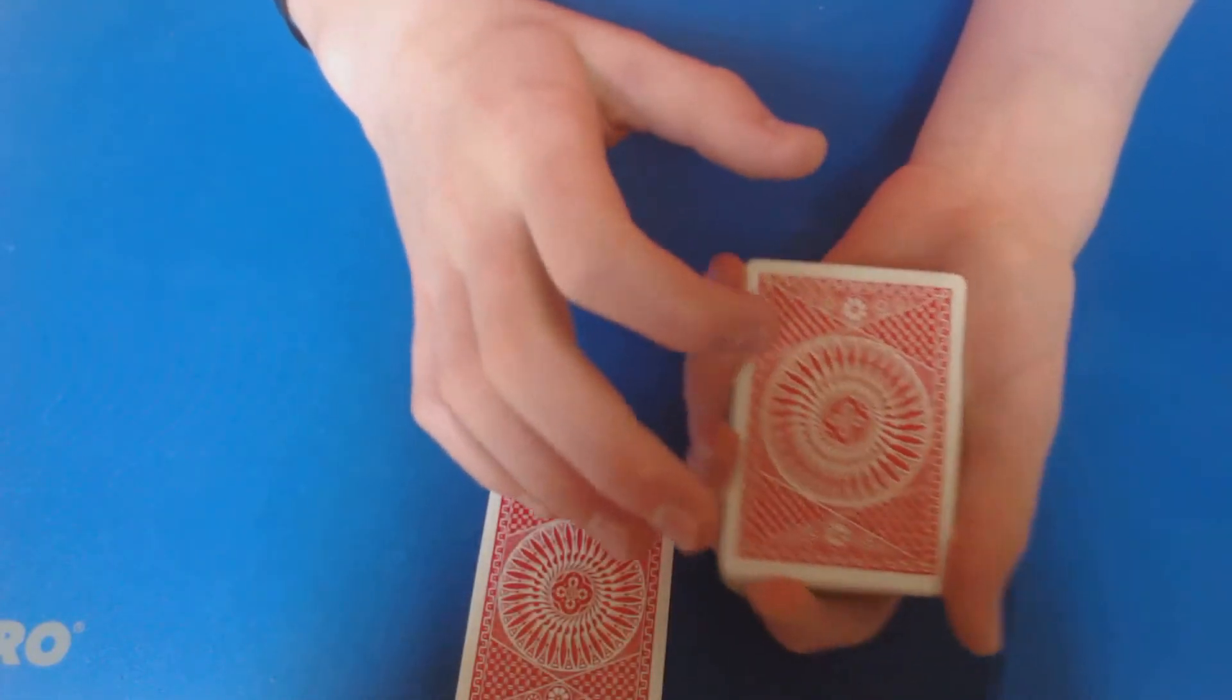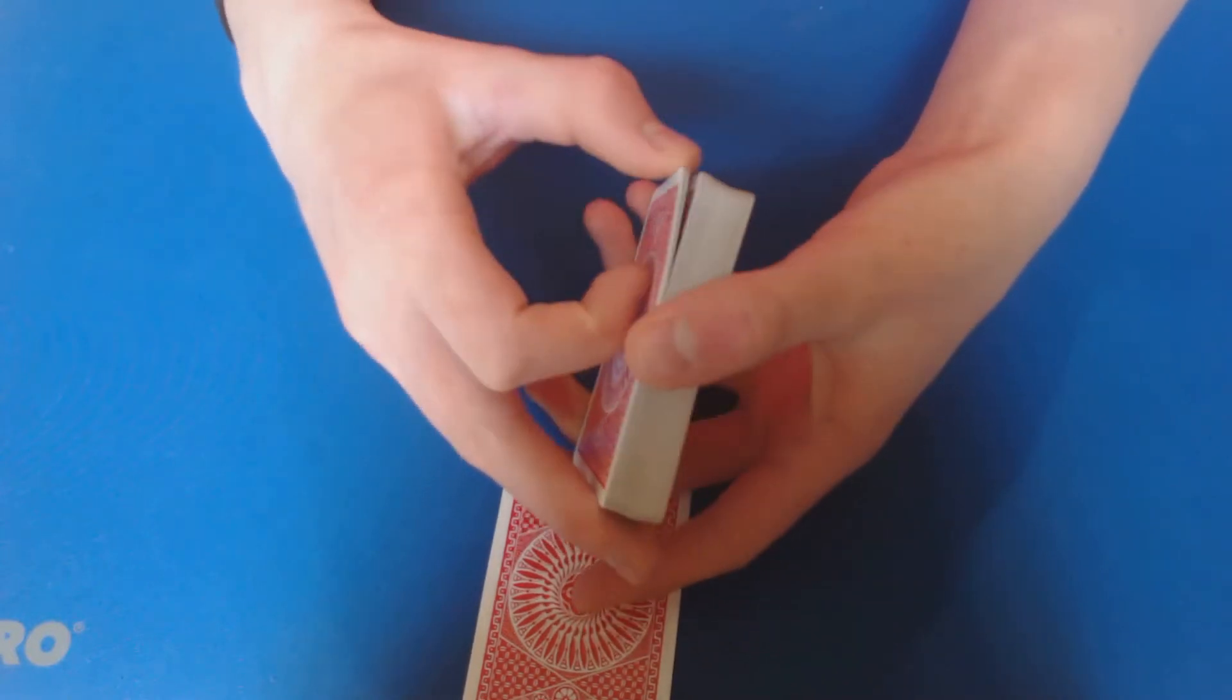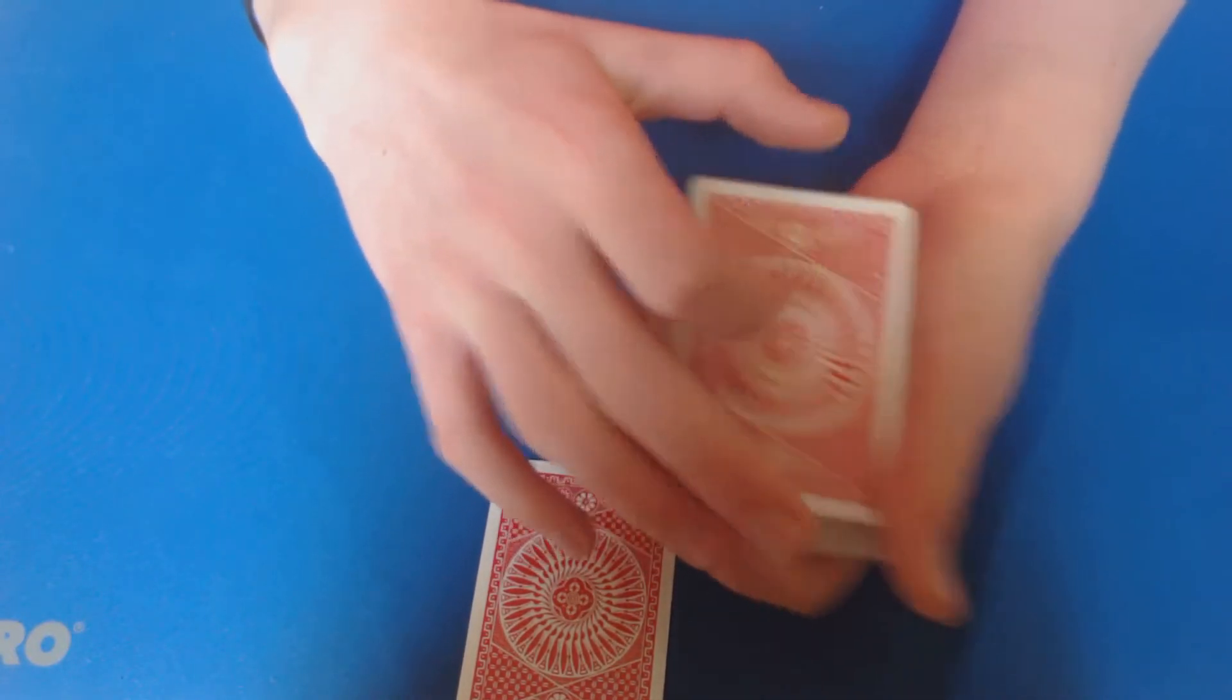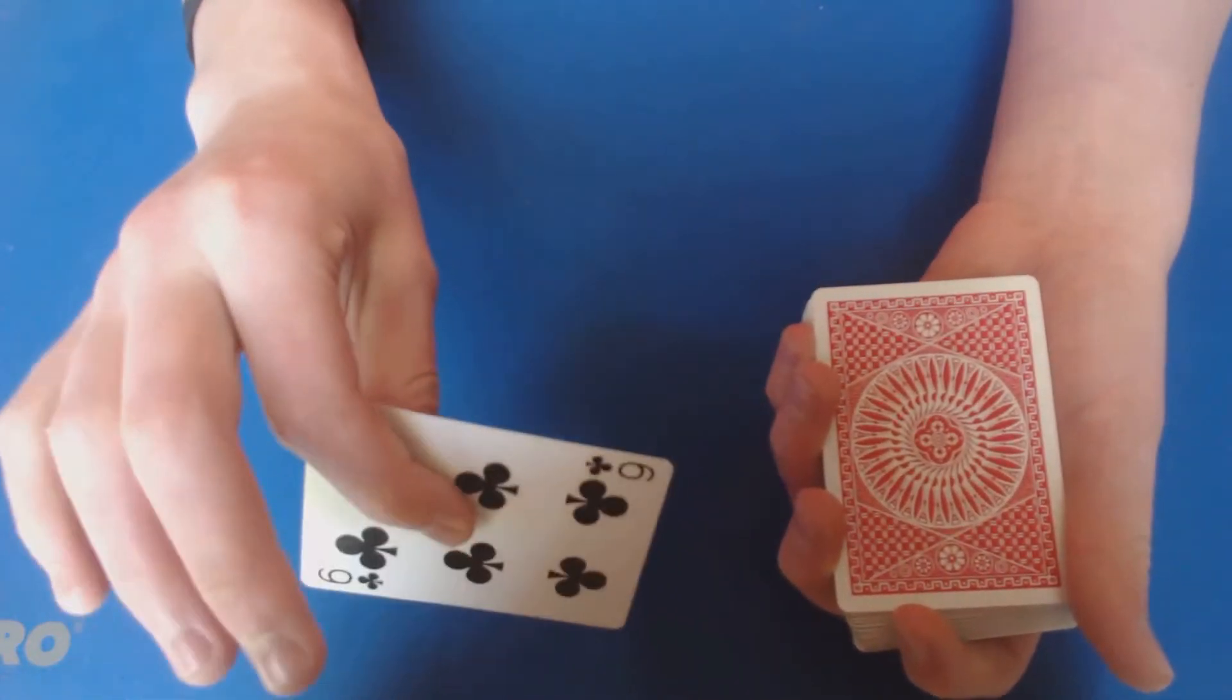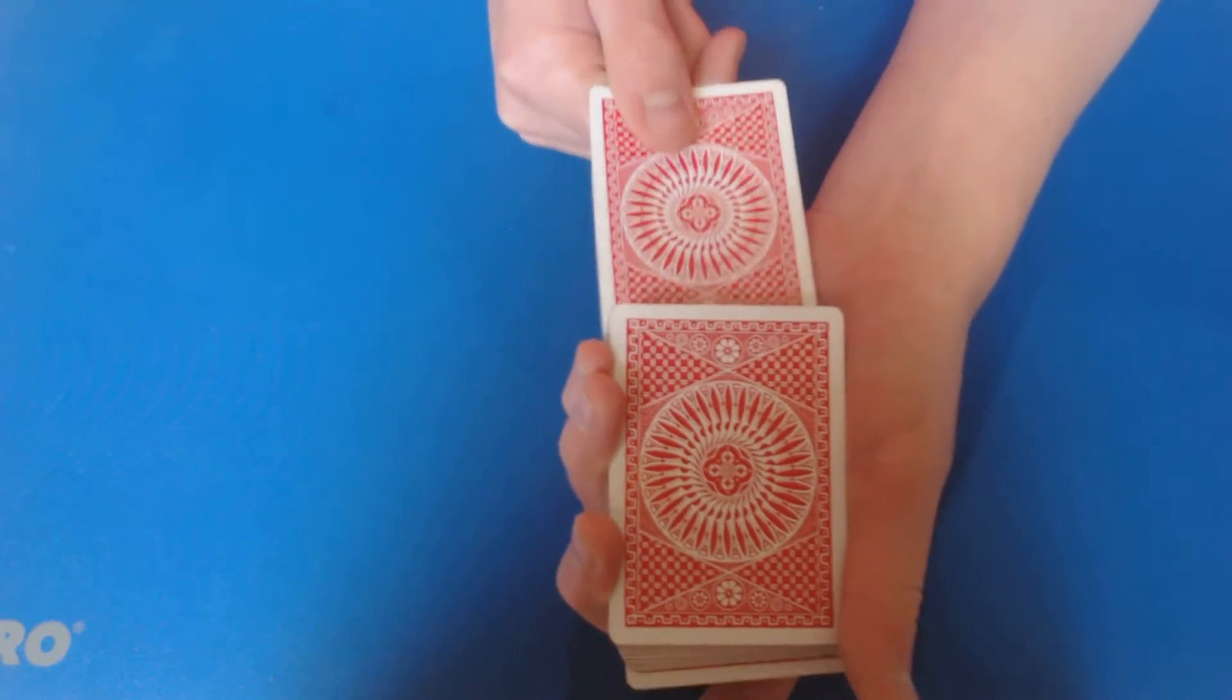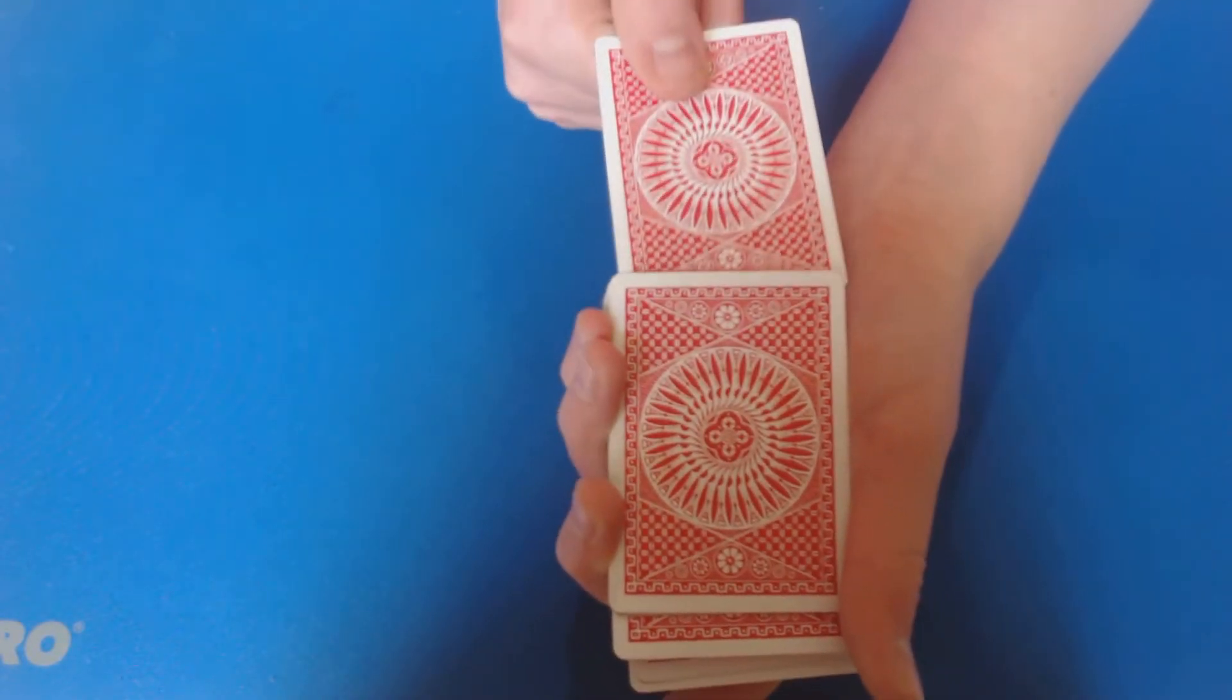Go ahead and prepare for it by either just getting that break from the back, right? And then you have that right there. Go ahead and show them their card. You don't want to see it, and then do the Marlo Tilt.